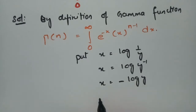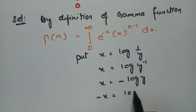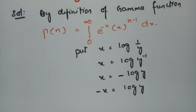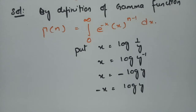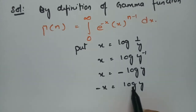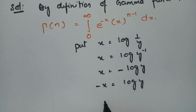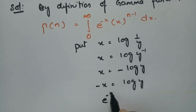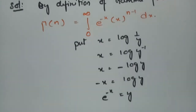And from this, minus x is equal to log y. So if we exponentiate both sides, this gives us e to the power minus x is equal to y.